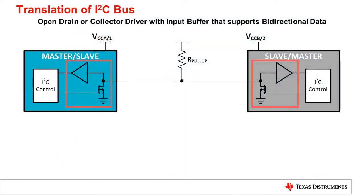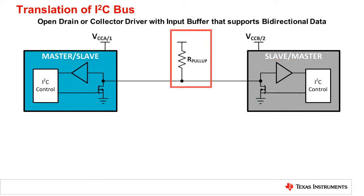I2C uses an open drain driver with an input buffer, which supports bi-directional communications. This means the pull-up resistor is completely in control of generating the high signal. If you aren't familiar with the I2C hardware layer, please see the I2C hardware overview video for additional information and training.